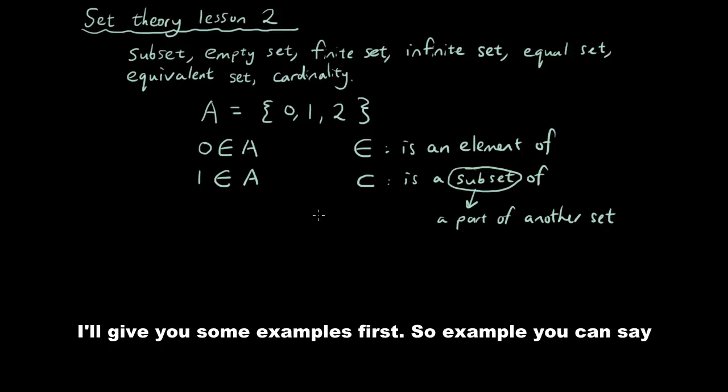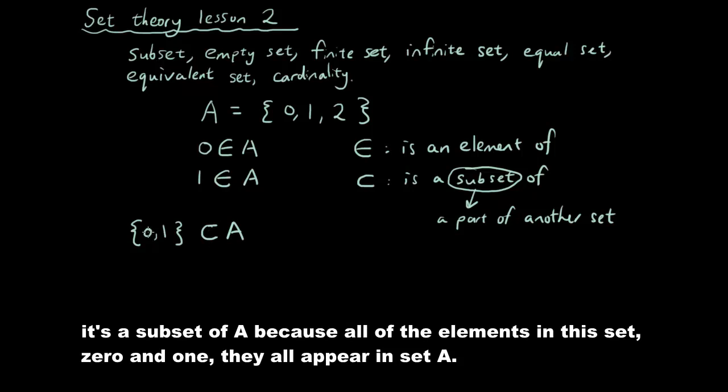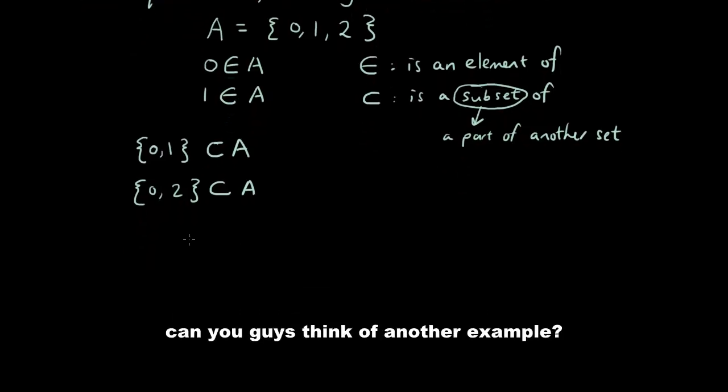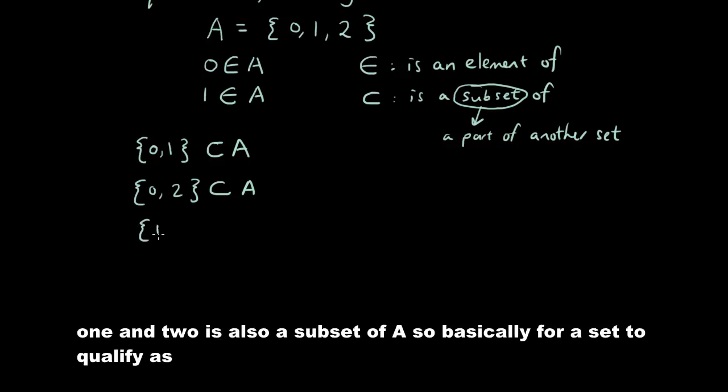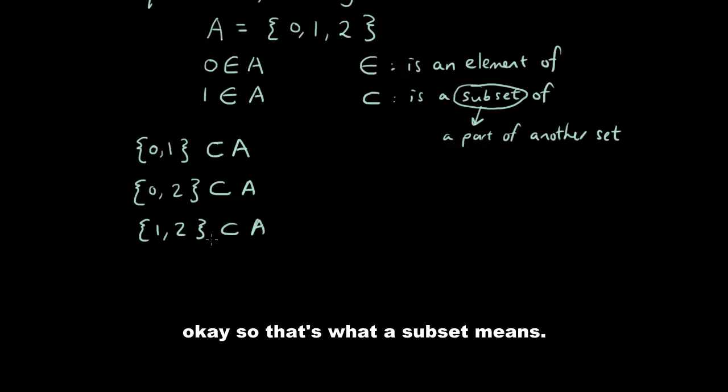I will give you some examples. For example, you can say {0, 1} is a subset of A. It's a subset of A because all of the elements in this set, 0 and 1, they all appear in set A. I could say for example {0, 2} is a subset of A. Can you guys think of another example? {1, 2} is a subset of A. Basically for a set to qualify as a subset of another set, all of the elements must appear in the other set.